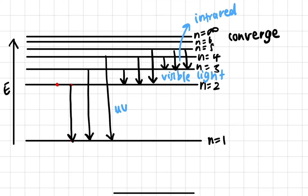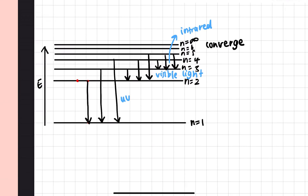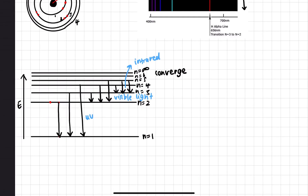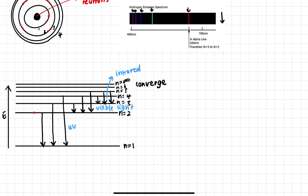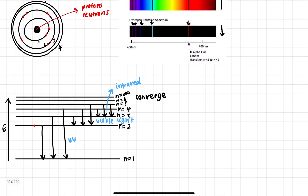We can understand that certain energy levels, when energies are emitted by electrons, produce certain energies on the emission spectrum and therefore produce different types of light or color, which we can see on the hydrogen emission spectrum. You can see how they're all connected.